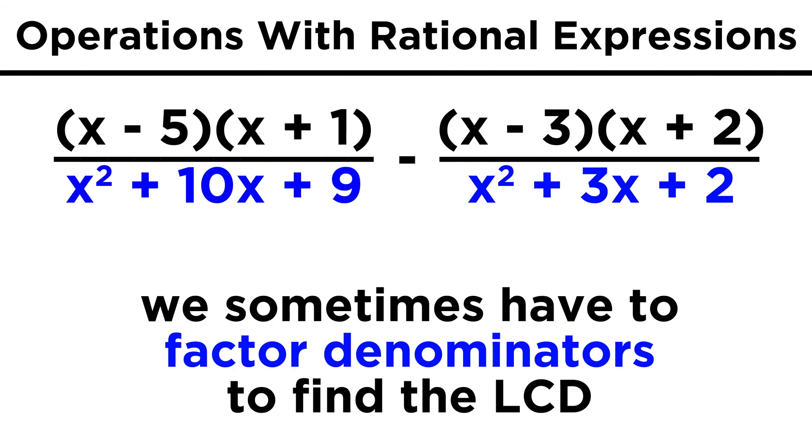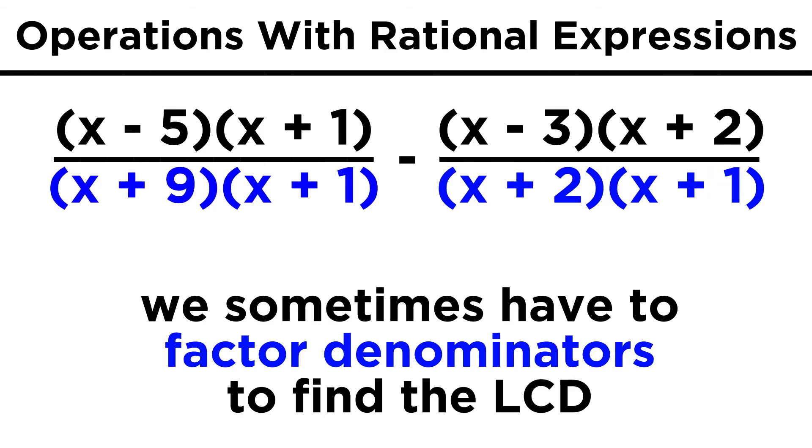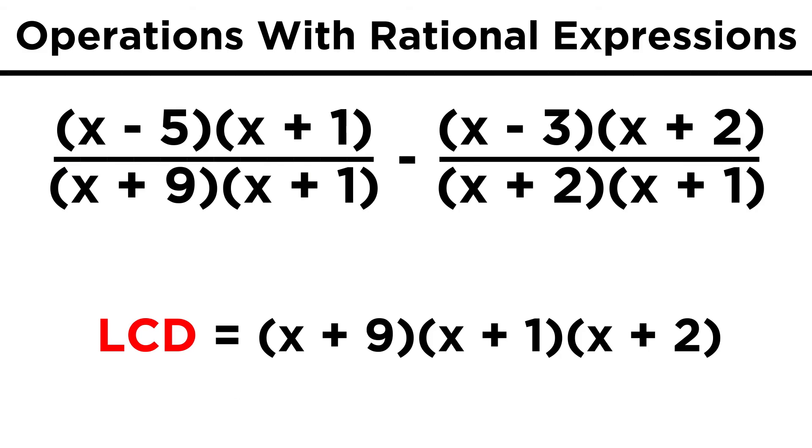If the denominators are more complex terms, we may have to factor them first, and once we have them factored, we can more easily see what the lowest common denominator will be. It will just be the product of all the terms in both denominators.